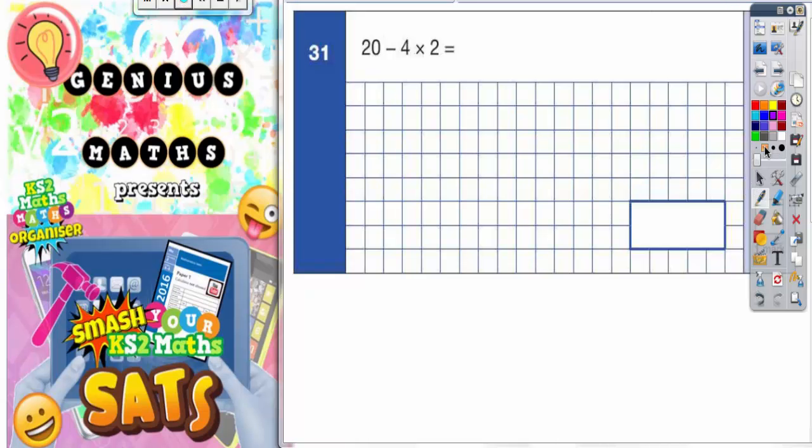Question 31: 20 take away 4 times 2. Now a lot of people are going to fall into a huge trap here because what they'll do is they'll just read it left to right without thinking about the order of operations.